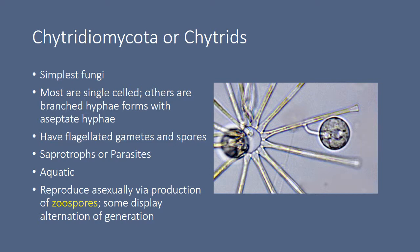Chytridiomycota, or chytrids, are the simplest fungi — most are single-celled, though some have branched hyphal forms with aseptate hyphae. Uniquely, they have flagellated gametes, which indicates they live in an aquatic environment. They can be saprotrophs or parasites. They reproduce asexually via zoospores and some display alternation of generations — a concept we'll revisit with plants.